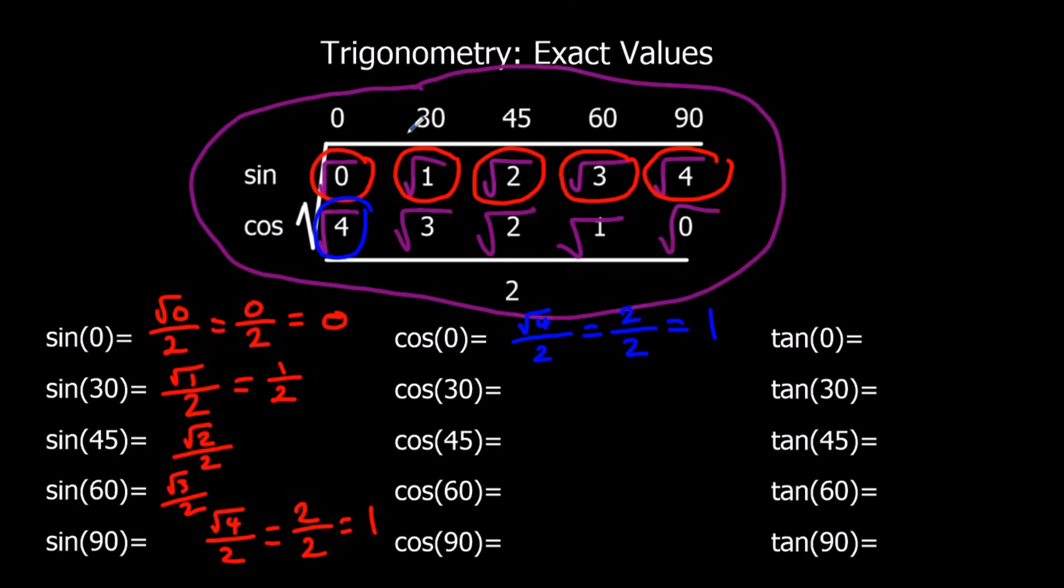Cos 30 is root 3 over 2. I can't simplify that, so we leave it as it is.